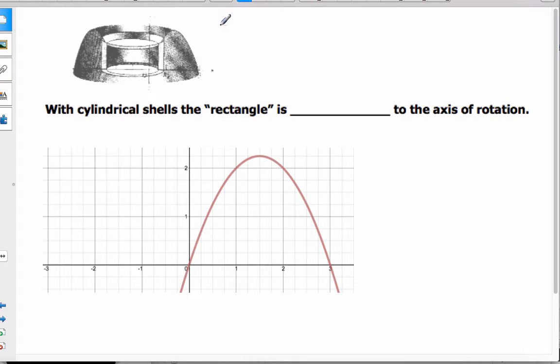Okay, so this is Volumes of Revolution, and this time we're going to talk about a different method called cylindrical shells. When we do it, we're always going to put the rectangles parallel to the axis of rotation.